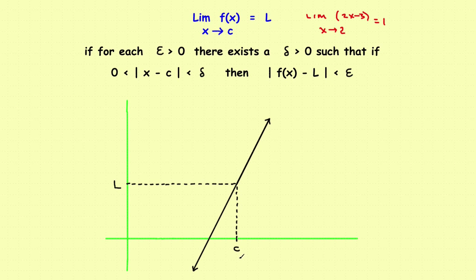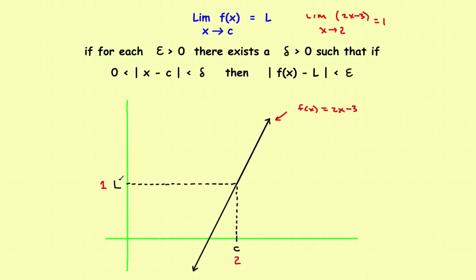As x approaches 2, that means c equals 2, so we'll have a 2 on the graph. The function 2x minus 3 is drawn as the line f of x. We want to show the limit equals 1, so we mark 1 on the y-axis. We'll do this graphically too — most students just need the algebraic version, but the graph shows what all the parts look like.